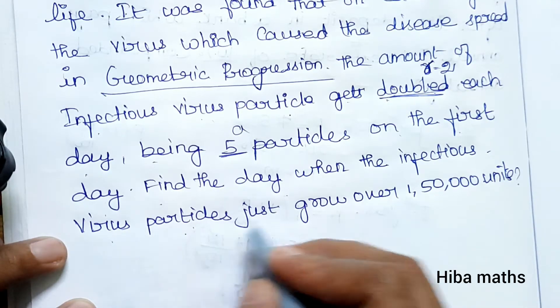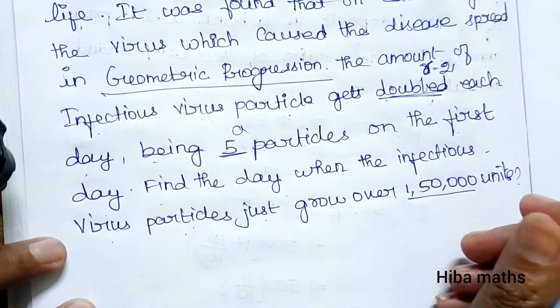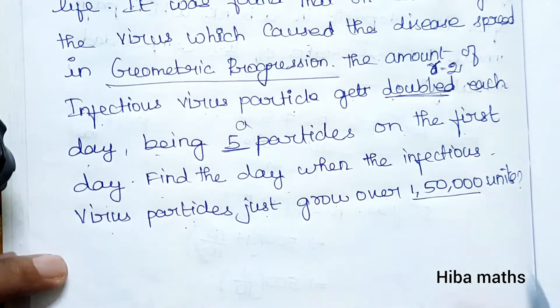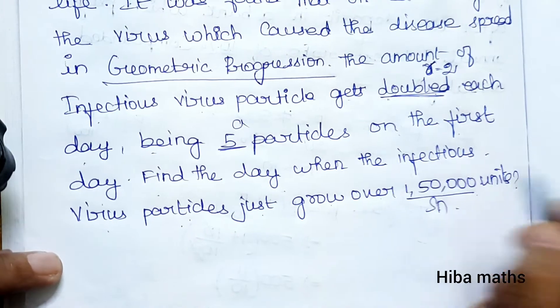On the first day, find the day when the infectious virus particles just grow over 150,000 units. So we need to find S(n), the total sum.